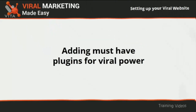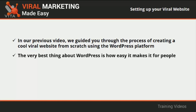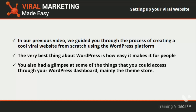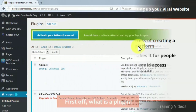Adding must-have plugins for viral power. In our previous video we guided you through creating a cool viral website from scratch using WordPress. The very best thing about WordPress is how easy it makes it for people to create a website in a matter of minutes. One key feature is the use of plugins, which will allow your website to perform beyond what you thought was possible. A plugin is a piece of software containing a set of functions that can be added to a given program or platform — in the case of WordPress, plugins can expand functionalities or add new features to your website. The WordPress community brags about having a plugin for making basically anything work.